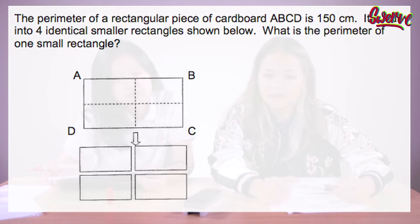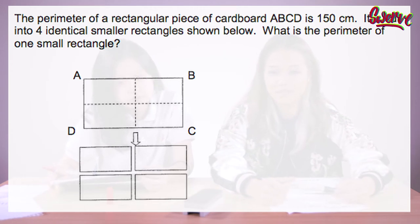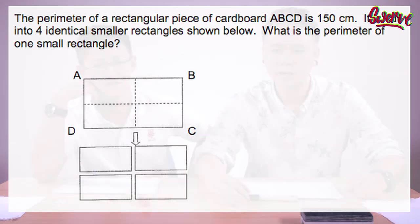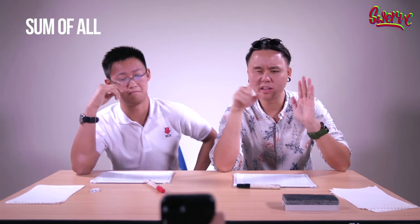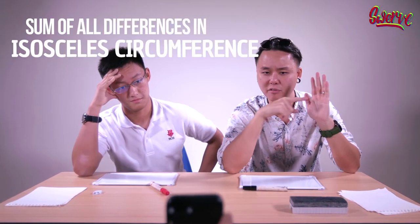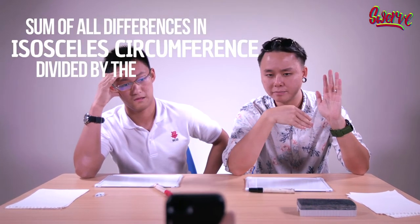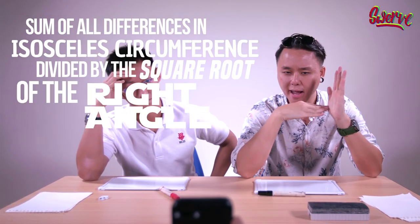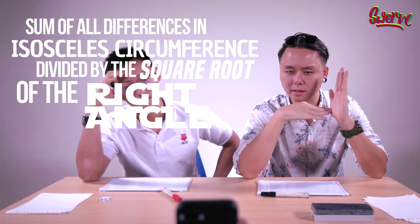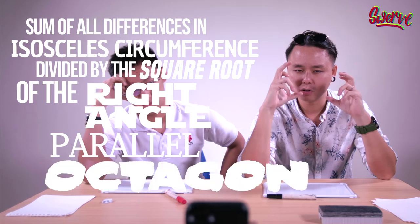The perimeter of a rectangular piece of cardboard ABCD is 150cm, cut into 4 identical smaller rectangles. What is the perimeter of one small rectangle? I know the perimeter is the sum of all differences in isosceles circumference divided by the square root of the right angle parallel octagon.